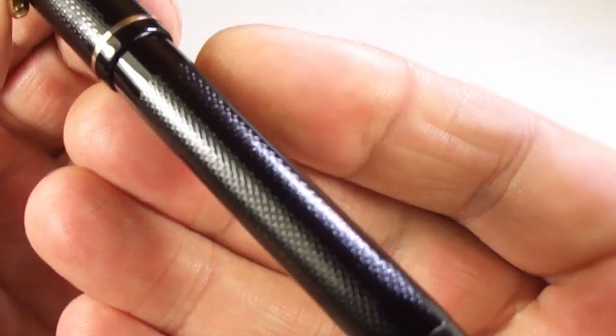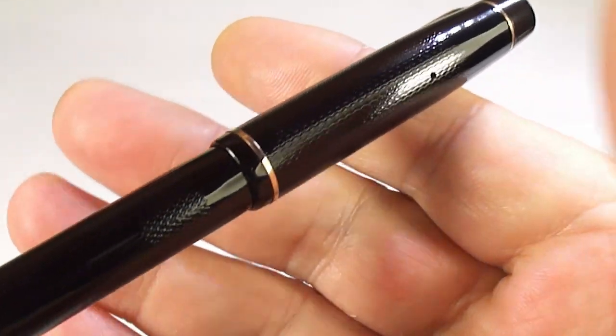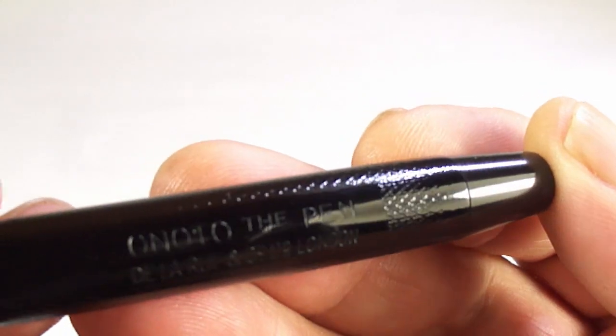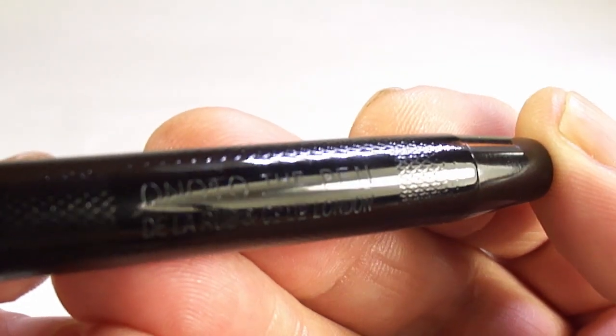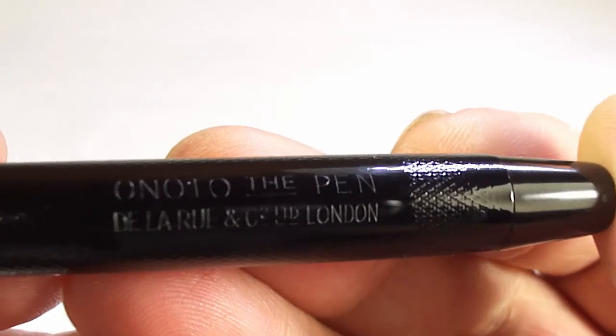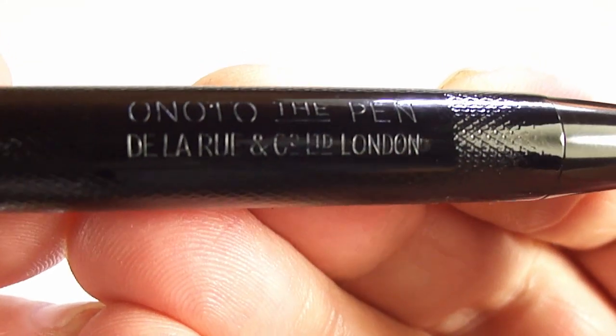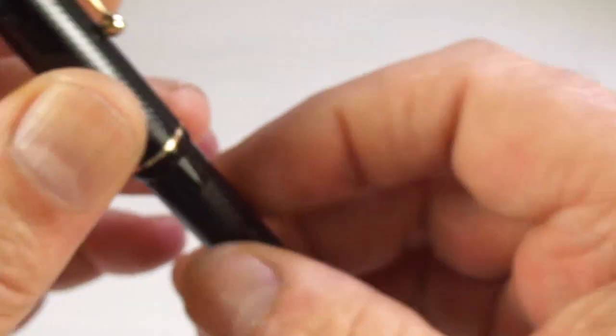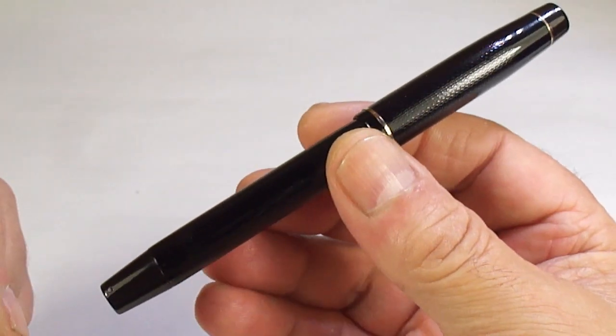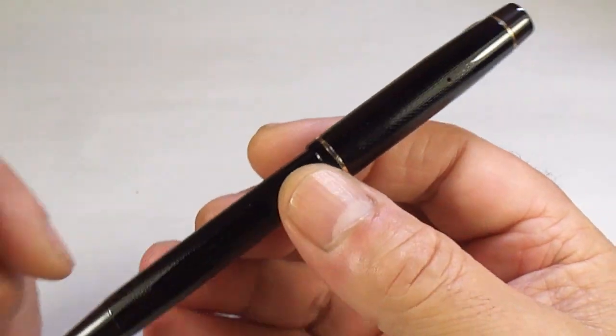As you can see from the previous video, it comes with this lovely chasing pattern there. It's now in gorgeous condition. Let me show you the barrel imprint. You can see it reads Onoto, the pen, De La Rue, London underneath. As I said, it's been fully restored. We've put a new cup washer, plunger washer inside, and new cork washers as well.